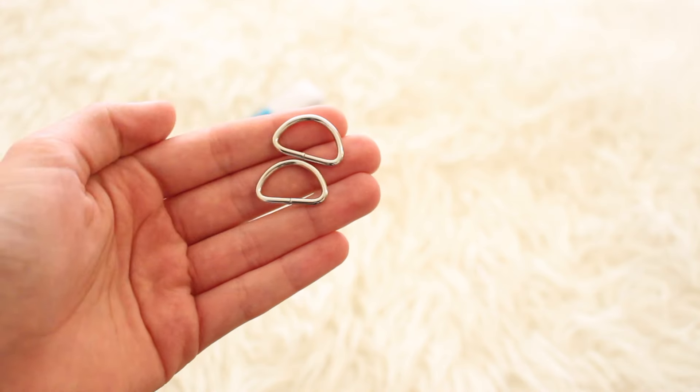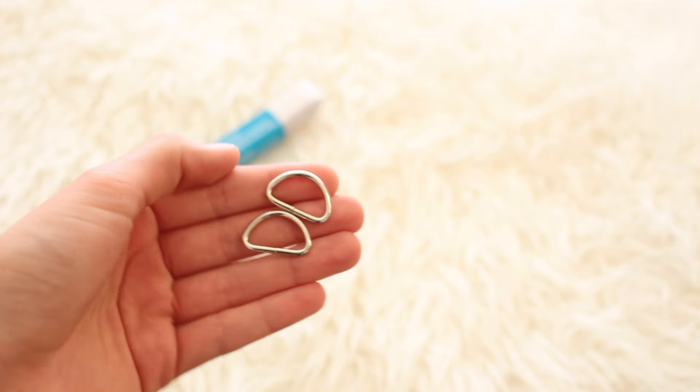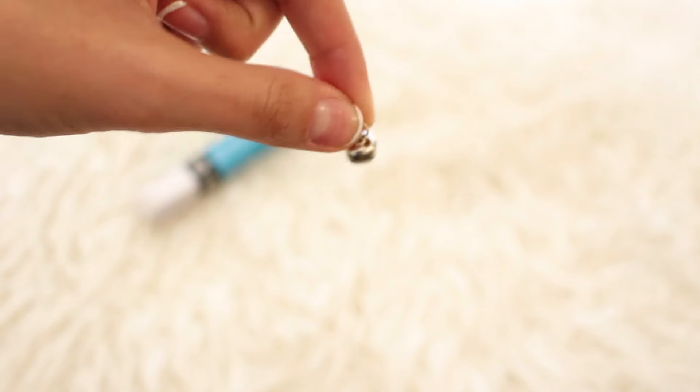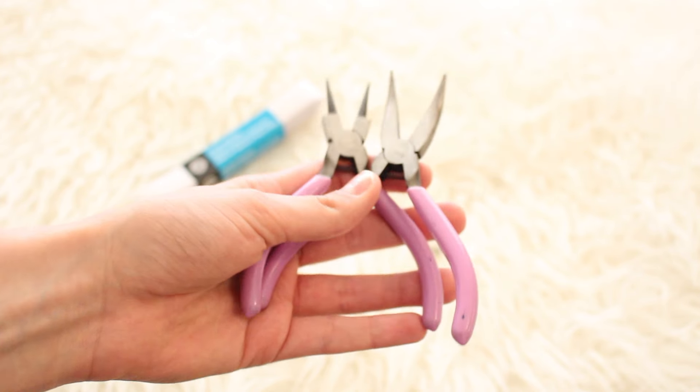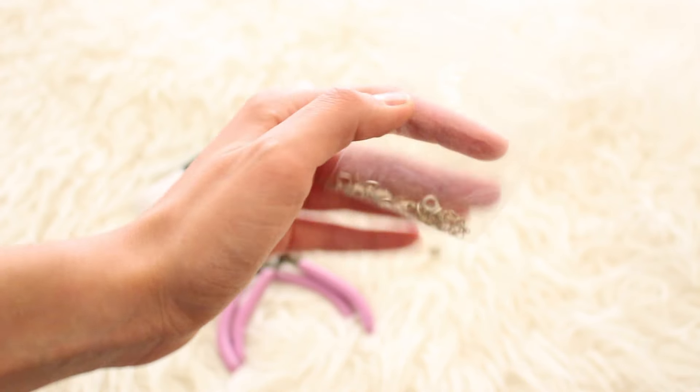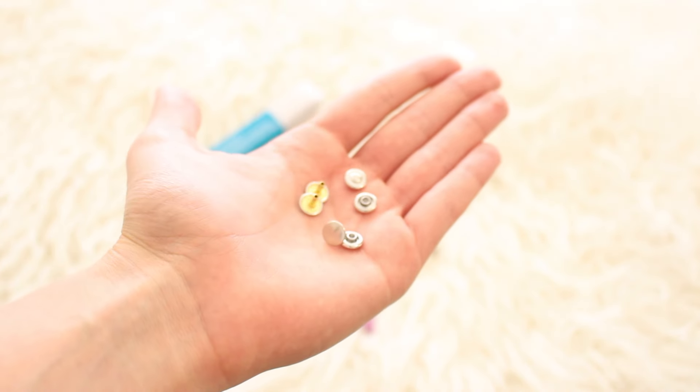So here's everything you need. You need some elastic, some metal D-rings, a little tiny bell (this is optional), some pliers, jewelry which includes hoops, chains, and a hook, and then some jean rivets.